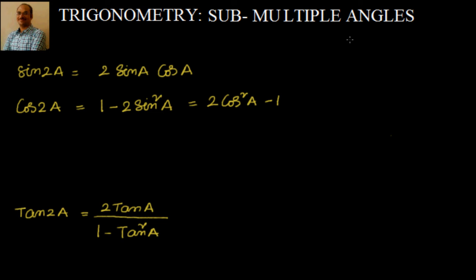What we have seen in the last video is 2a and 3a — these are called multiple angles. Now the meaning of sub-multiple angles is a/2, a/3, a/4, something like that.